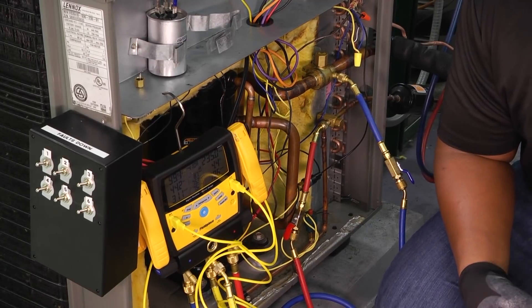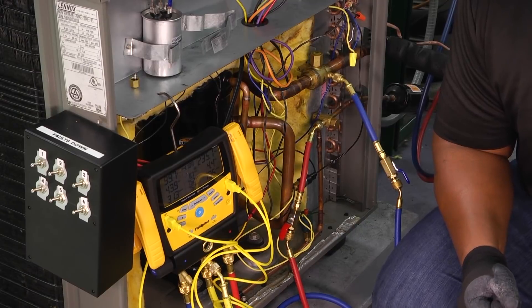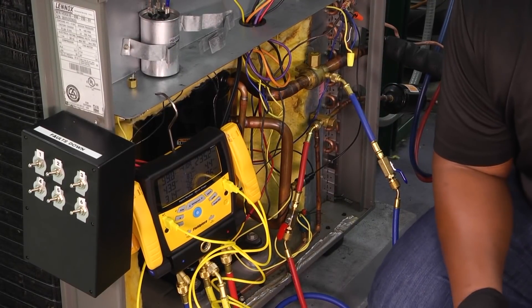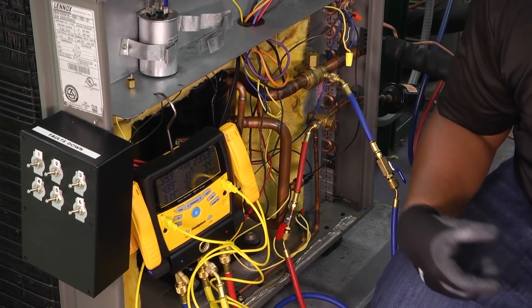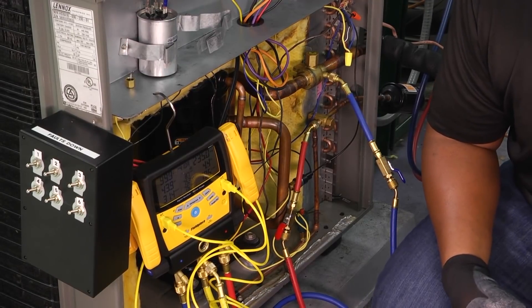If we happen to have a TXV metering device, then we're going to charge our system looking at our subcooling number. Now, it doesn't mean that we totally negate the other number. It just means that that's going to be the primary number that we look at in evaluating the whole system.